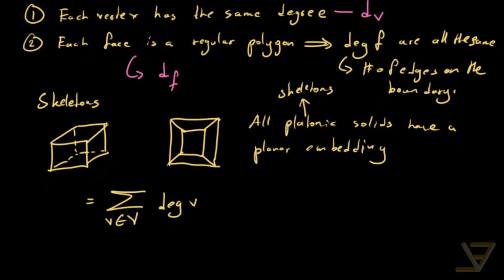And that's just equal to the number of vertices times the degree of each vertex. And we know that from a different video, we know that this is equal to two times the number of edges. This is called the handshaking lemma.